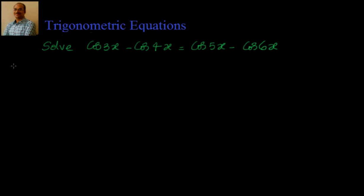Hi, welcome. We are solving some problems as part of Trigonometric Equations. So let us go ahead and solve this problem: cos 3x minus cos 4x equal to cos 5x minus cos 6x.